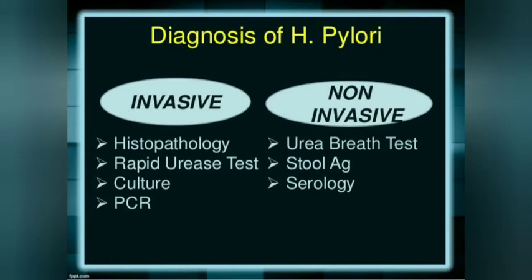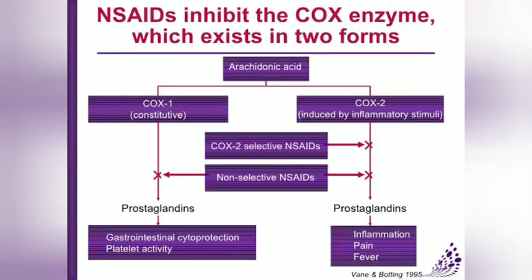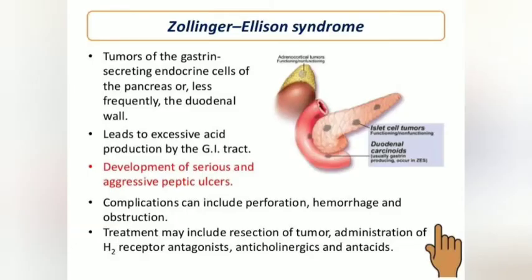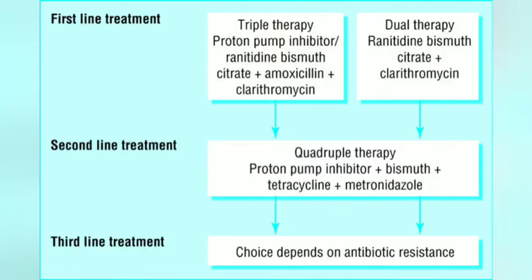Endoscopy can also be used to diagnose H. pylori. The differential diagnosis includes peptic ulcer disease from other causes, with distinguishing factors being associated NSAID use and Zollinger-Ellison syndrome.